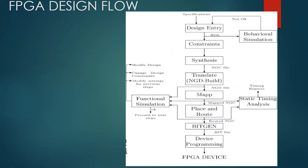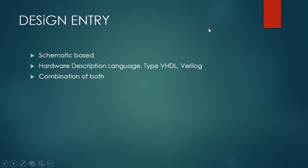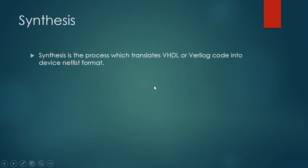So once again, clearly: the first step is design entry — here you can enter your design, specify the requirements in the form of a schematic or in the form of a hardware description language such as Verilog or VHDL, or a combination of these two. Next is the synthesis process — synthesis converts the Verilog or VHDL code into a device netlist format, that is, a circuit.